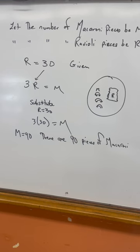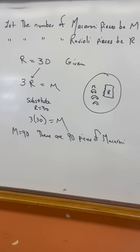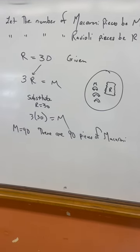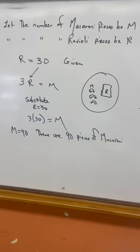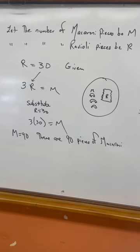And then we write down 3R equals M. Some people think 3M equals R, but no. If you look at the visual, the macaroni pieces are smaller. And when we solve that, there are 90 macaroni pieces altogether. So you've got to have a visual, you've got to have let statements, and then you can answer the question. That's the key.